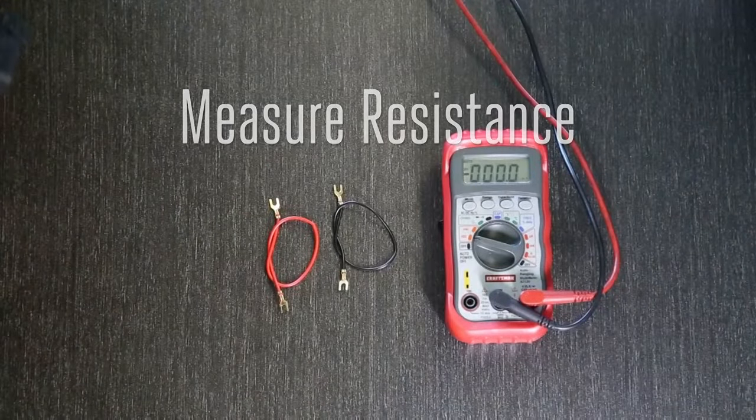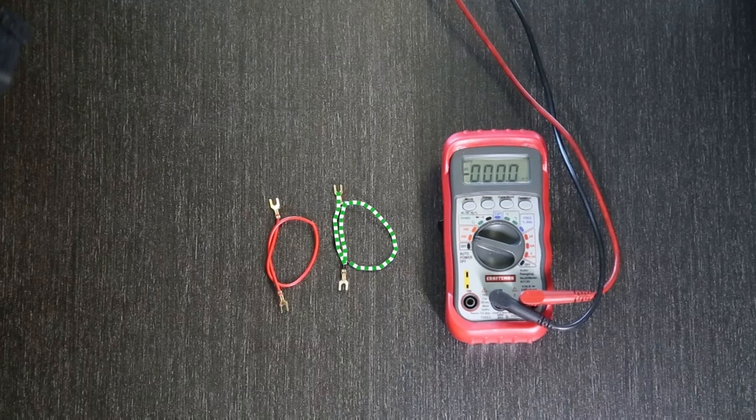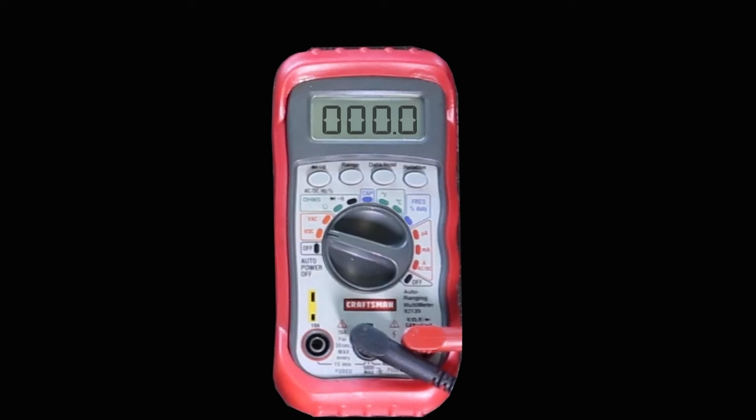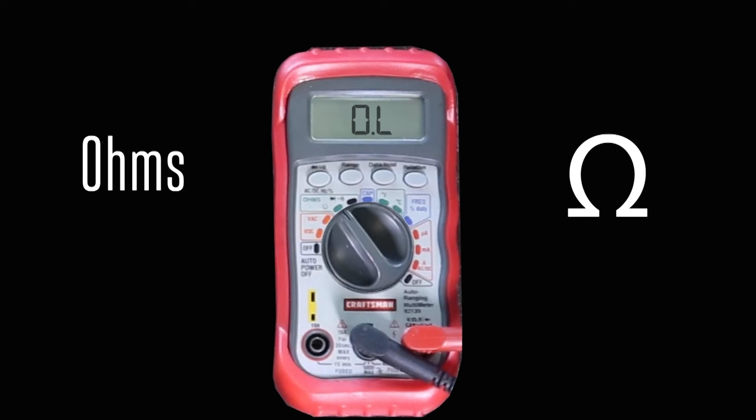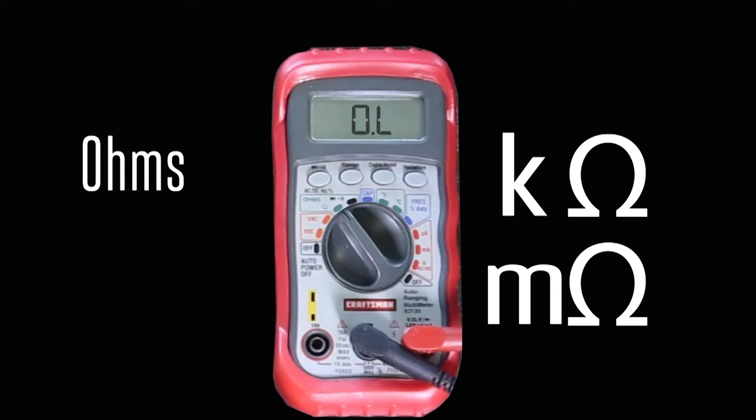So what's wrong with this wire? First, let's test a normal wire. We want to see if current can flow down the wire, and we do that by looking for resistance. Set the multimeter to ohms, or this symbol. You may see either a K or an M in front of the omega symbol. The K stands for kiloohms, or units of a thousand. The M stands for megaohms, units of a million.